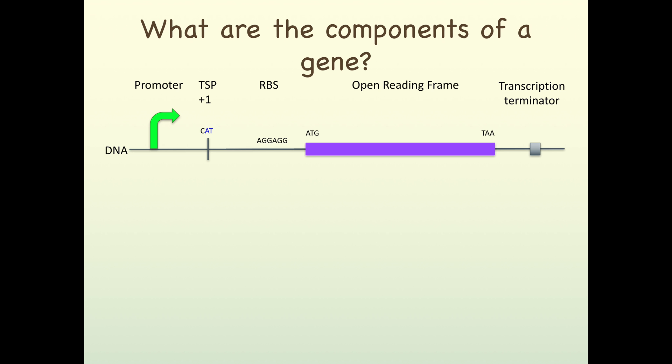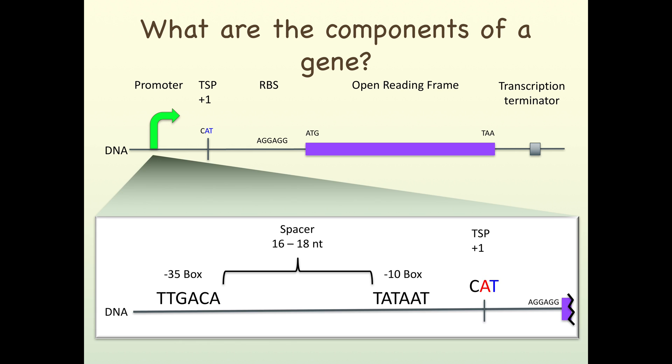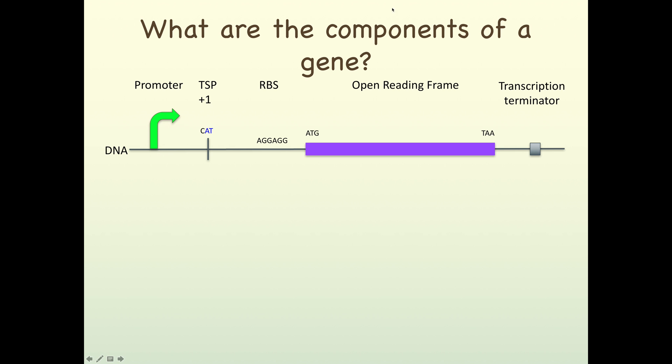What are the components of a gene? A gene begins with a promoter, a regulation sequence that initiates transcription of the gene, a plus one or transcription start point, a ribosome binding site, an open reading frame - the region that contains the coding for the protein, and finally the transcription terminator.